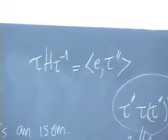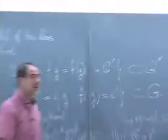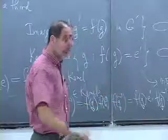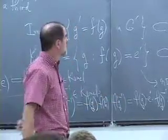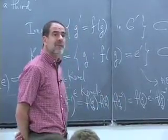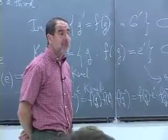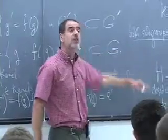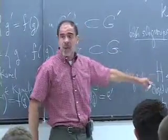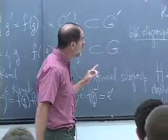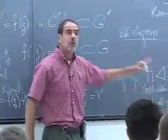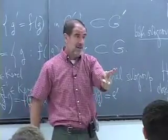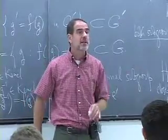A student asks: is it if and only if? Is a normal subgroup necessarily the kernel of a homomorphism? Yes, but that's a theorem we have to prove. Right now, all we know is if we have a homomorphism, its kernel is normal. One of the big observations we're going to get to is if we have any normal subgroup, there's a homomorphism which has it as a kernel. But we haven't gotten there yet.